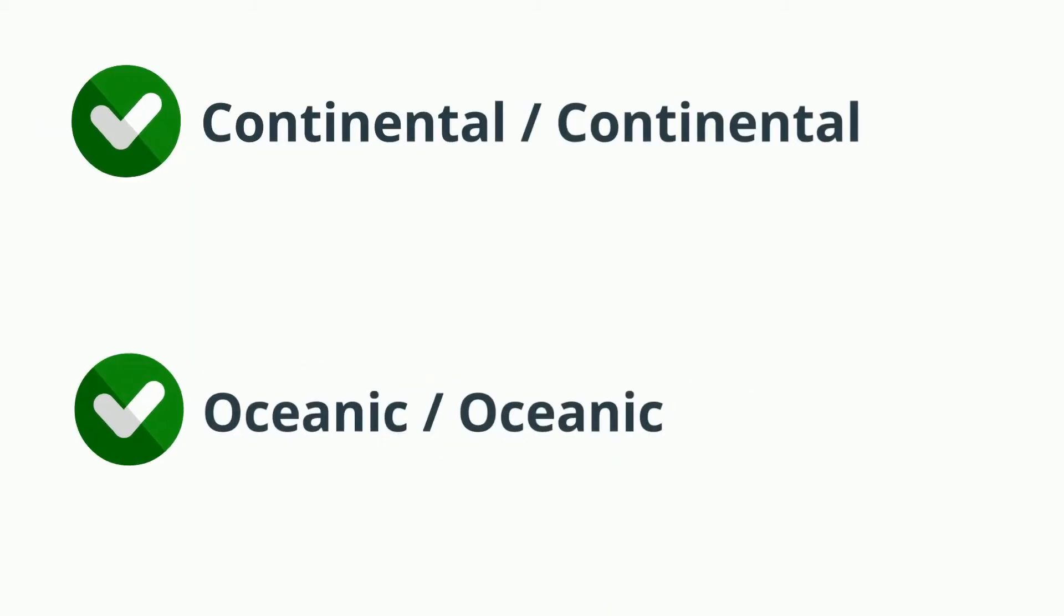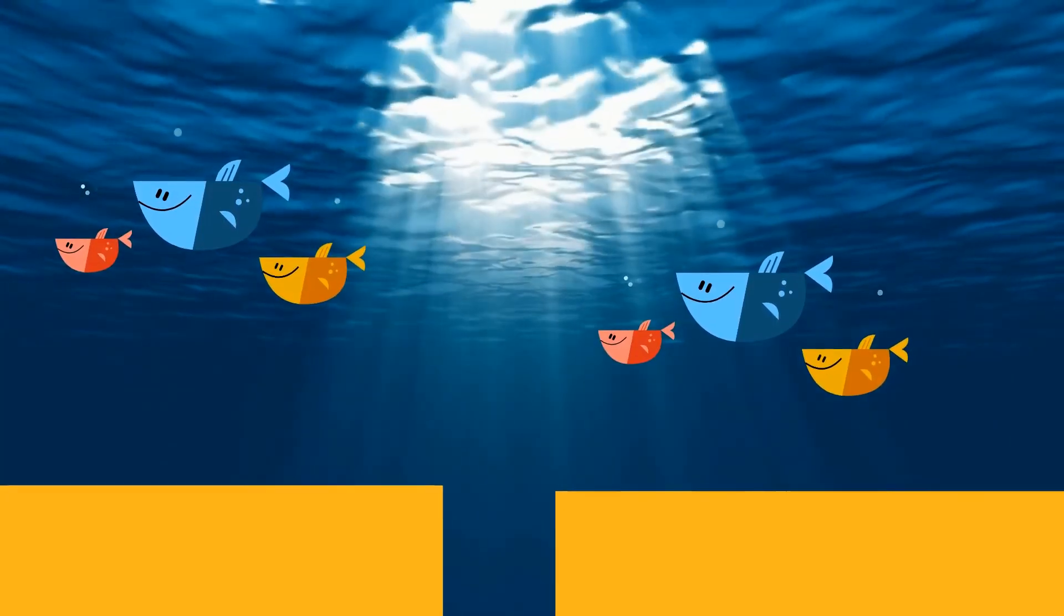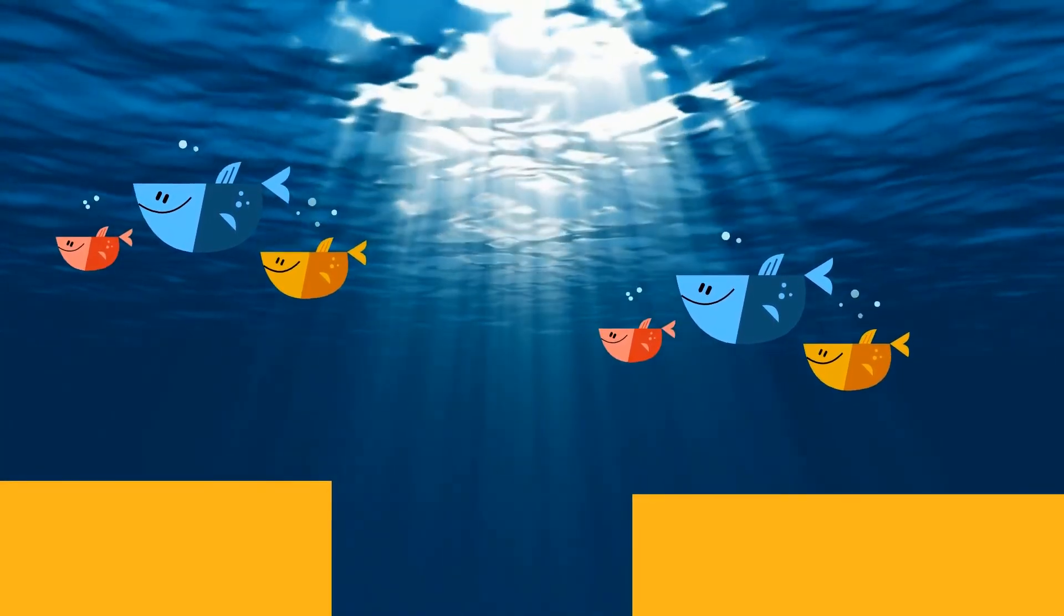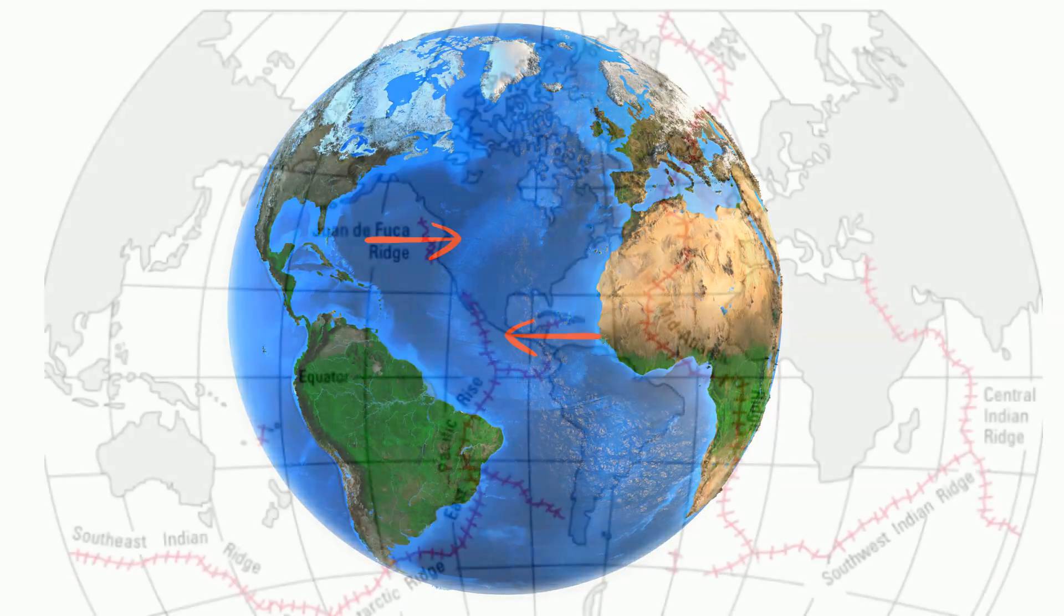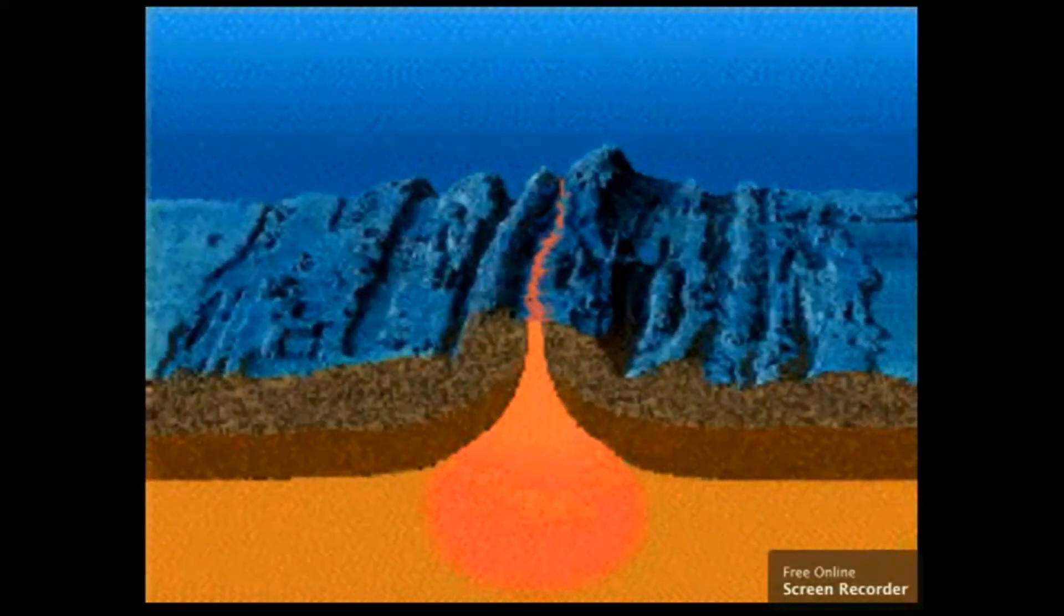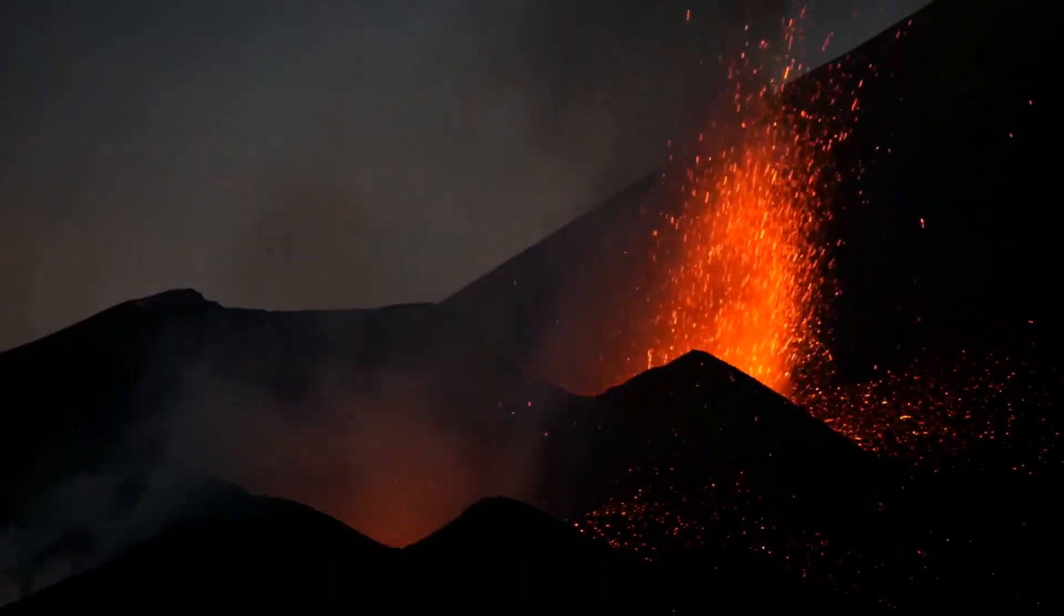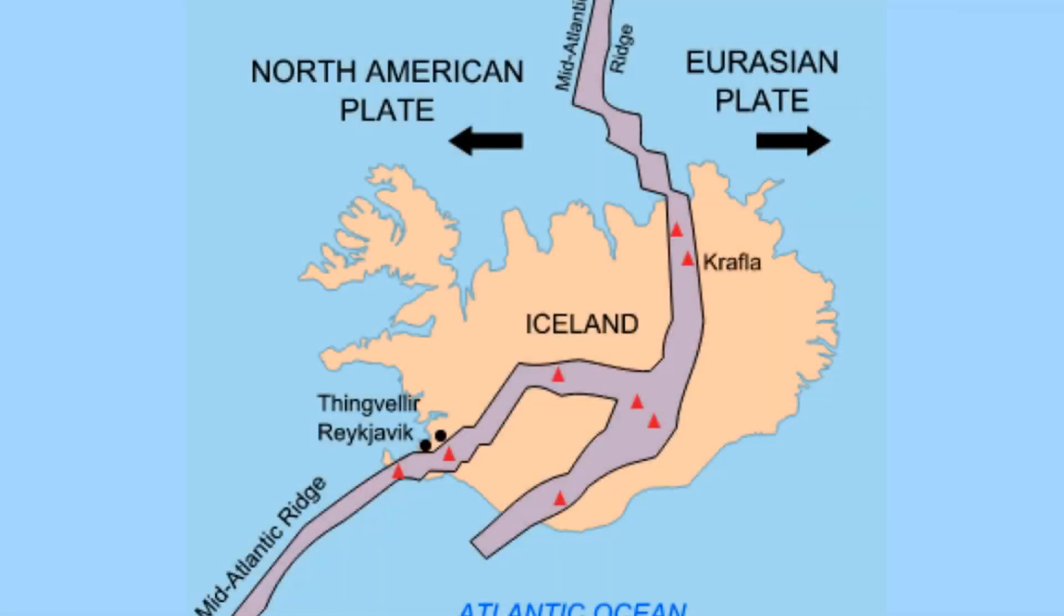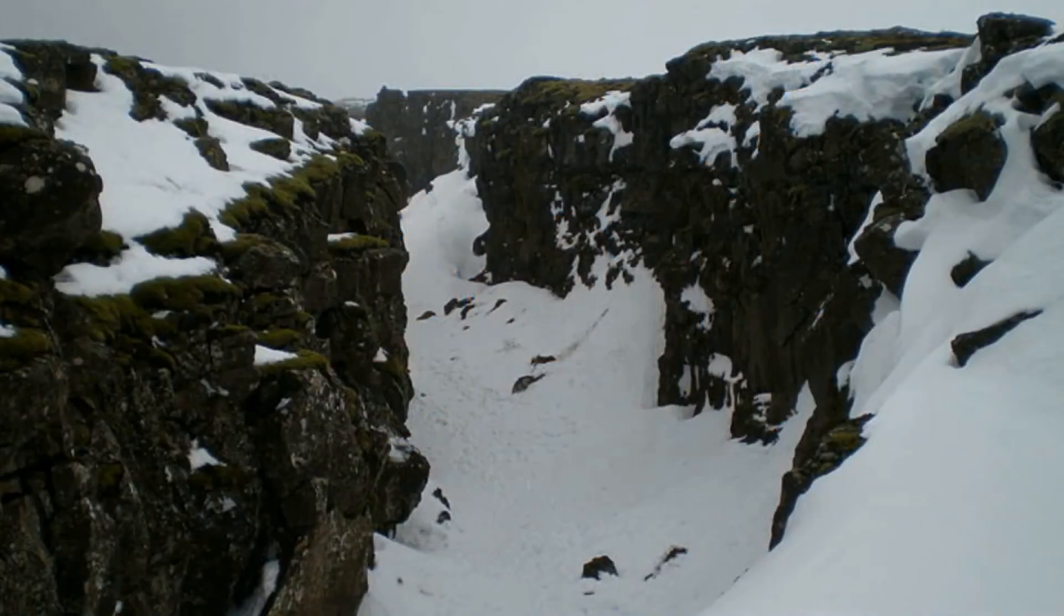There are two major types of divergent boundaries: continental and continental lithosphere and oceanic and oceanic lithosphere. Oceanic and oceanic divergent boundaries occur when two oceanic plates move away from one another. This is where seafloor spreading takes place. The most common example is the mid-ocean ridge which stretches around the world. The mid-ocean ridge can be seen here in red. Divergent boundaries are constructive boundaries because the rising magma creates new oceanic crust and lithosphere. The mid-ocean ridge runs right through Iceland. Here's what it looks like on land. Imagine this same formation underwater.